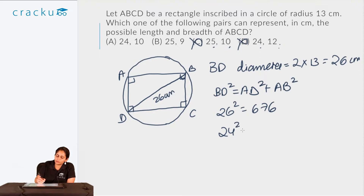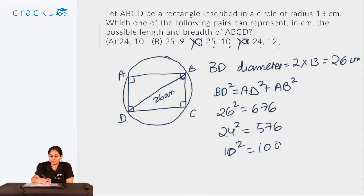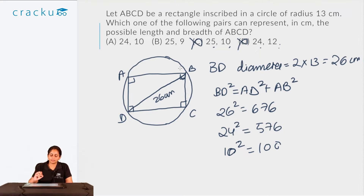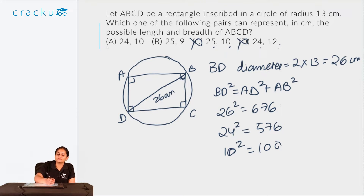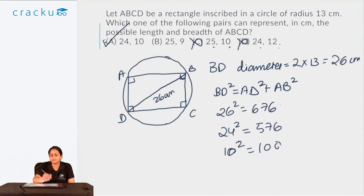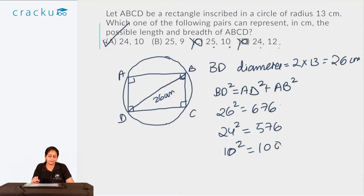What is 24²? 24² is 576 and 10² is 100. So for a rectangle of sides 24 and 10, the diagonal would be 576 + 100 = 676. The required equation is satisfied. So AB = 24 and AD = 10 — this pair represents one possible case where this rectangle can be inscribed in a circle of radius 13 centimetres. The right answer is option A.